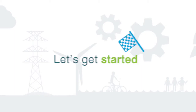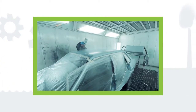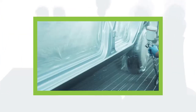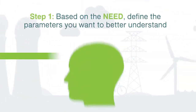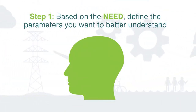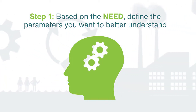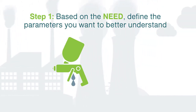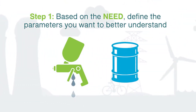Let's get started. As an example, we look at a simplification of a motor vehicle spray painting process. Step 1: based on the need, define the parameters you want to better understand — for example, paint and solvent use, losses, and other process materials.